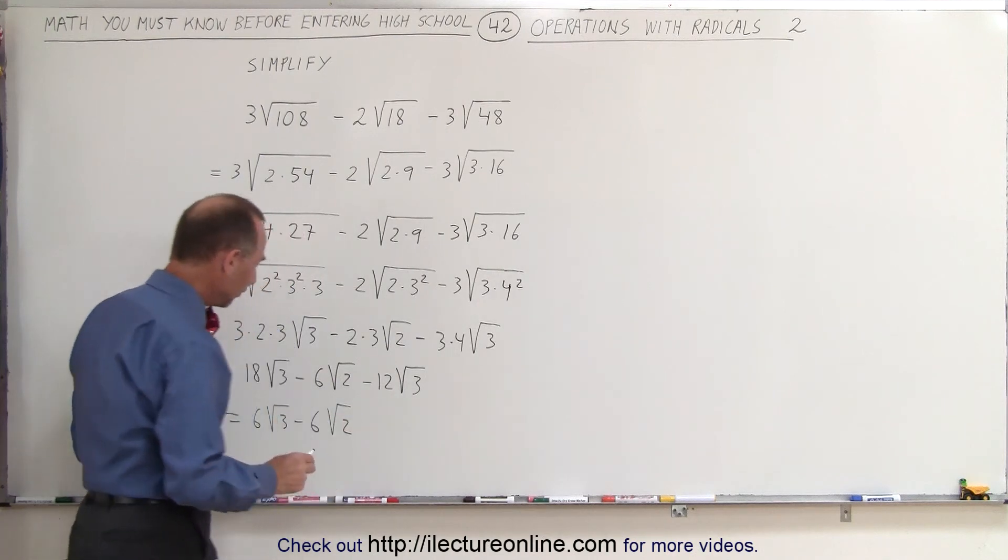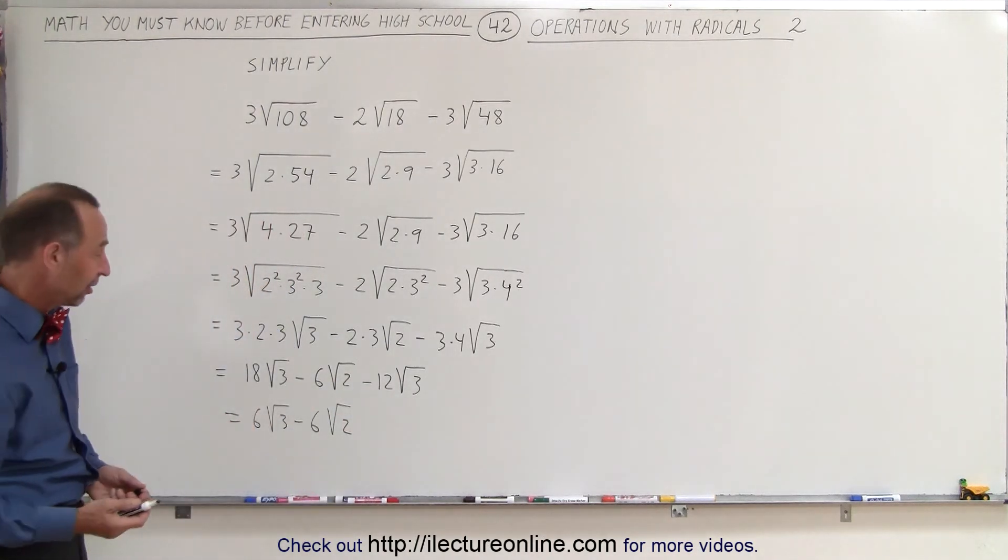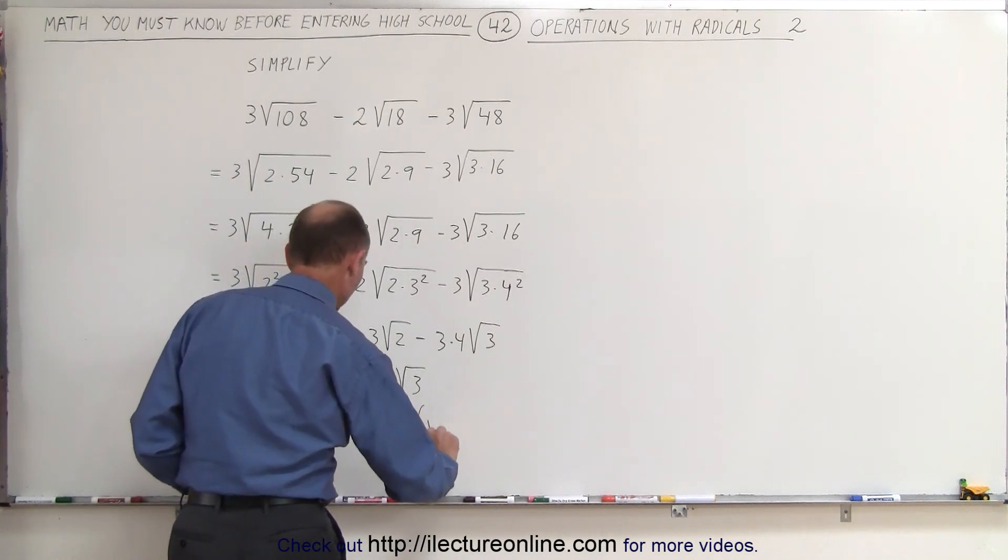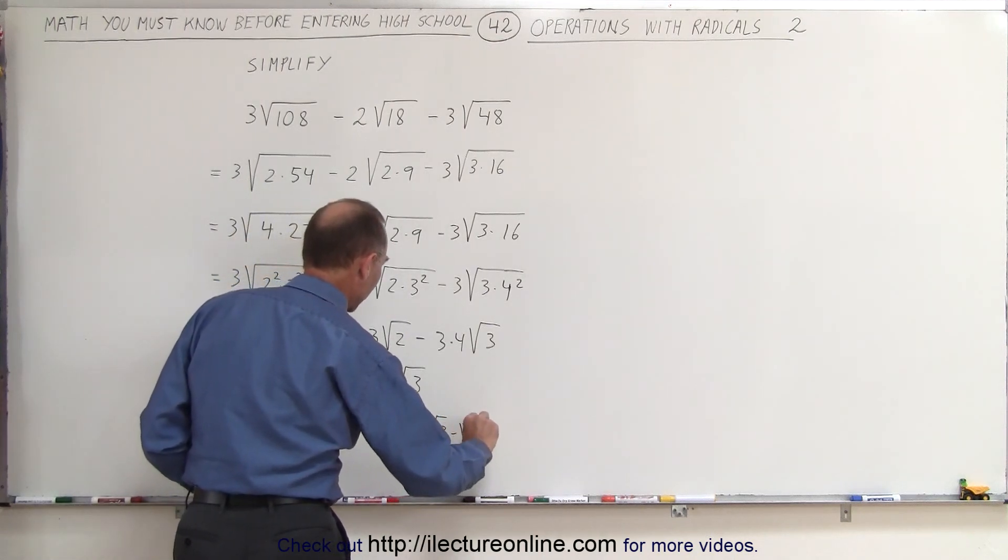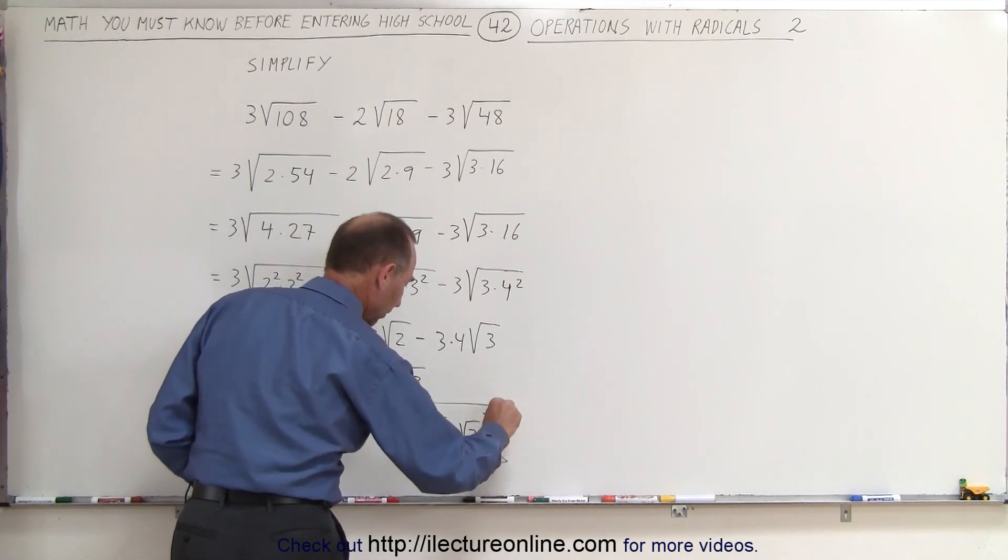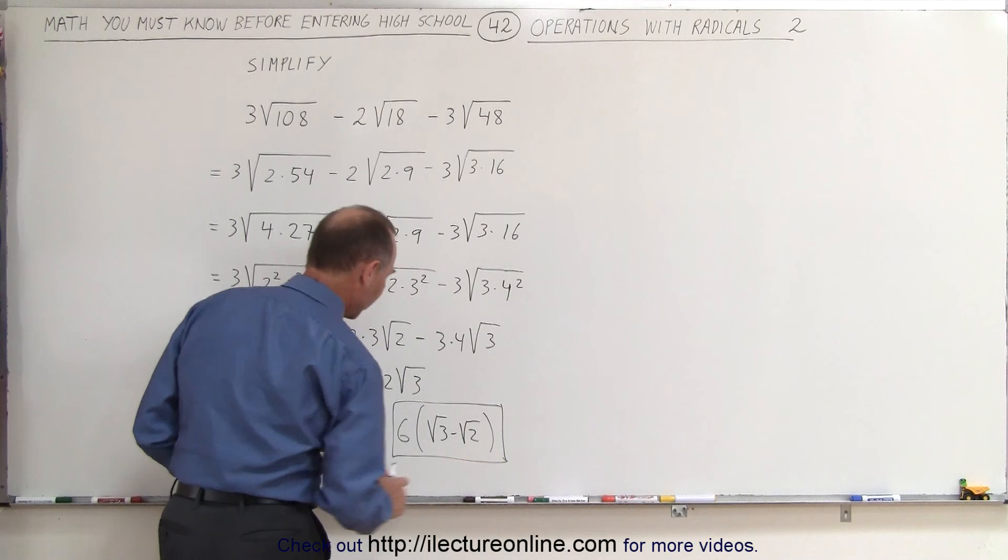And of course, you can see you could factor out a 6 from both expressions, so this is equal to 6 times the quantity square root of 3 minus the square root of 2. And that would be the simplest form of our original expression.